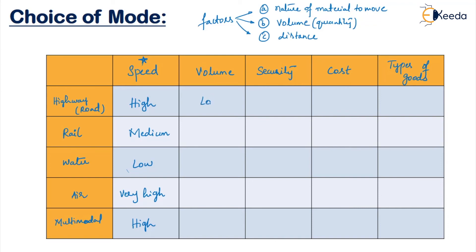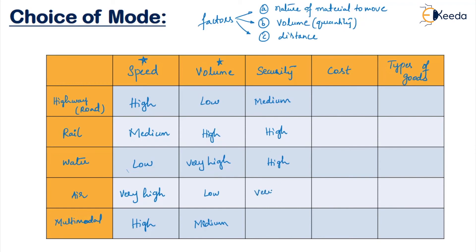Coming to volume: highway can transport low volume, rail can transport high volume, water can transport very very high volume, air can transport very low volume, and multi-modal can transport a medium level. Coming to security: highway is medium — there can be accidents and robberies. Rail is high, water is high, air is very high because of many security checks, and multi-modal is medium.